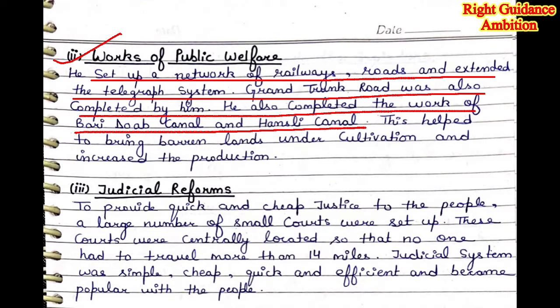Second point: Works for Public Welfare. He set up a network of railways and roadways, and extended the telegraph system. The Grand Trunk Road, which connects many highways, was also completed by him. He also completed the Bari Doab Canal and Hunsley Canal. Rivers played a very important role at that time for agriculture. Artificial canals were created to bring barren, unfertile lands under cultivation, ultimately increasing agricultural production.